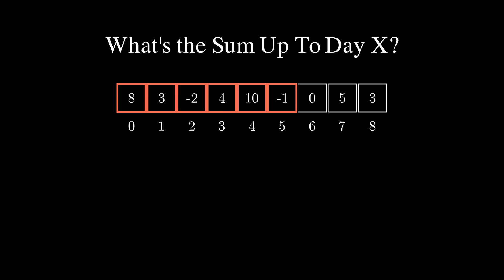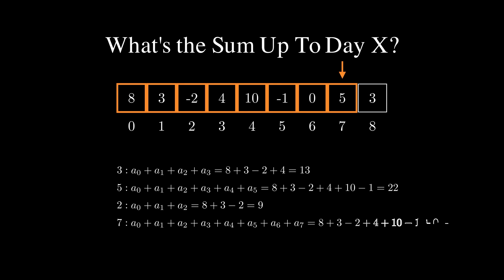Again let's look at the naive approach. If the queries ask you about the performance up until days 3, 5, 2 and 7 we can loop through all the numbers for each of the queries and add the values in our initial array together. So for 3 we would calculate a 0 plus a 1 plus a 2 plus a 3. Then for 5 we would calculate a 0 plus a 1 plus a 2 plus a 3 plus a 4 plus a 5. For 2 we would sum up a 0, a 1 and a 2. While for 7 we would need to add all the numbers from a 0 up until a 7.